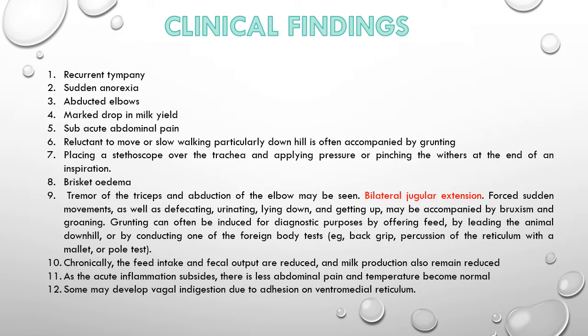Grunting can often be induced for diagnostic purposes by offering feed, by leading the animal downhill, or by conducting one of the foreign body tests such as the back grip, percussion of the reticulum with a mallet, or the pole test. Chronically, feed intake and fecal output are reduced and milk production remains reduced. As acute inflammation subsides, there is less abdominal pain and temperature becomes normal. Some may develop vagal indigestion due to adhesion on the ventromedial reticulum.